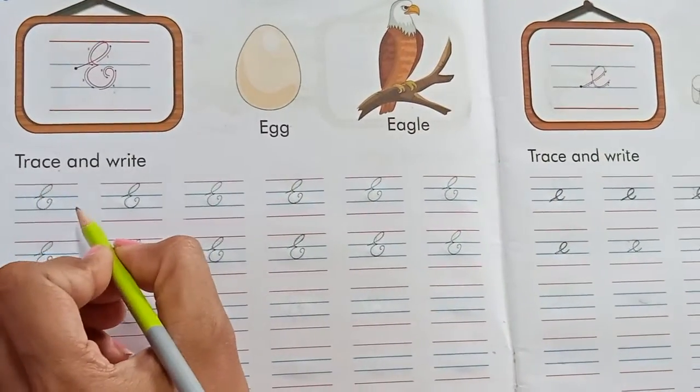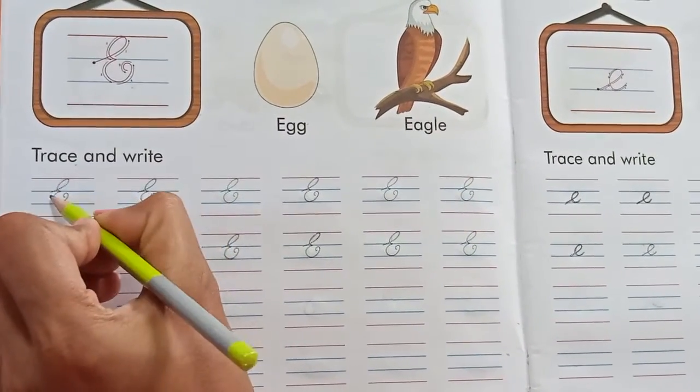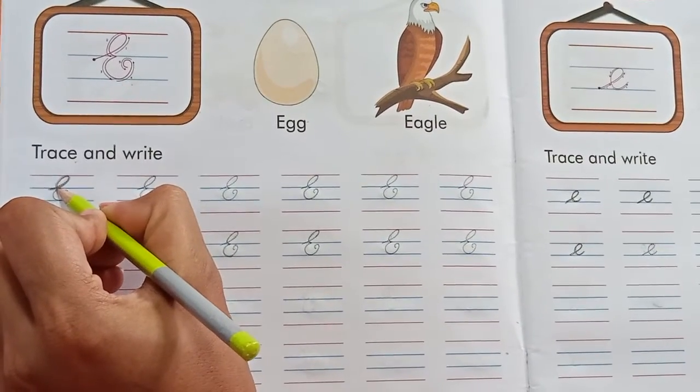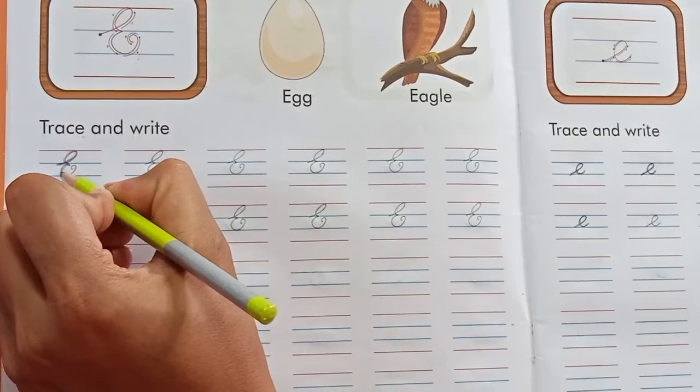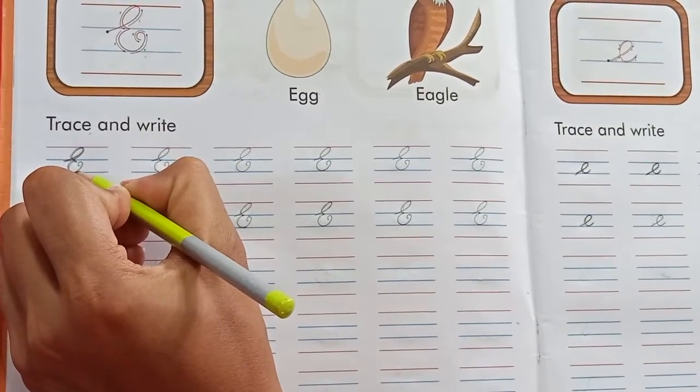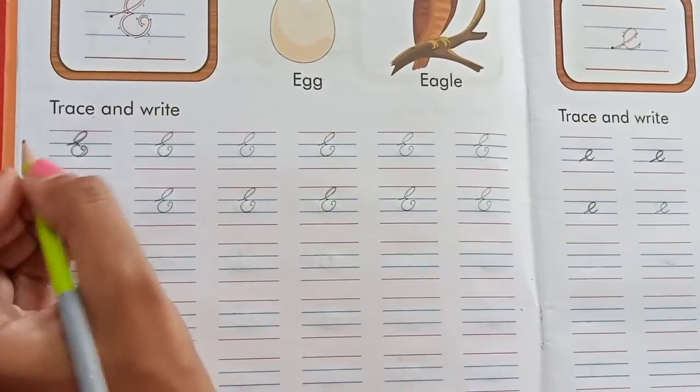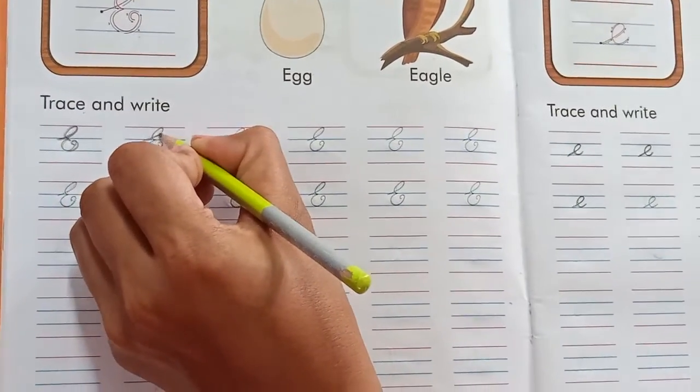Now you have to trace with ma'am. Like this. Starting from the first blue line. Then touch red line. Then again come to second blue line and small curve. Like this.